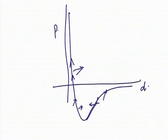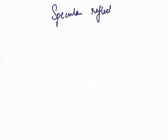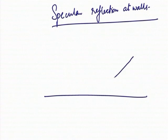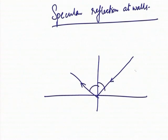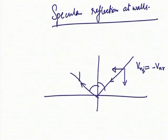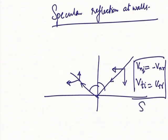So if we go with this hard sphere model, that is what is normally put in kinetic theory. The last assumption I normally include is specular reflection at walls. If a molecule comes in at a certain angle it is reflected specularly, meaning this angle equals that angle. The normal component of velocity reverses sign — v_normal_incident equals negative v_normal_reflected — while the tangential component does not change at all: v_t_i equals v_t_r.